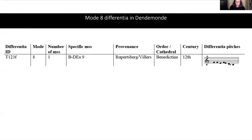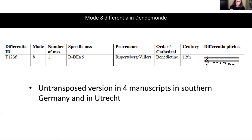Finally, there is only one mode 8 antiphon in the two Hildegard manuscripts, and in Dendermonde it includes a transposed differentiae, T123f. The untransposed version, 123f, is found in only four manuscripts, all southern German or Utrecht. Despite the unusual manuscript treatment of the differentiae in the Hildegard manuscripts, being able to compare differentiae usage across 161 manuscripts locates these manuscripts in mostly Benedictine and cathedral traditions in southern German locations, as well as in the Low Countries.